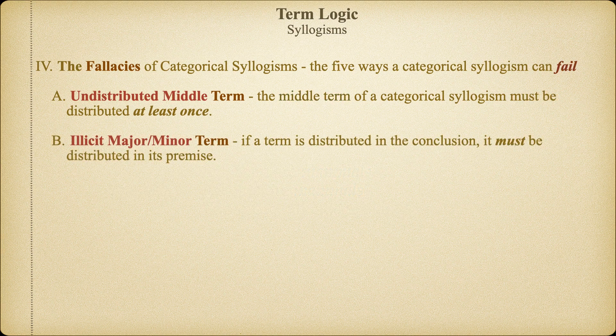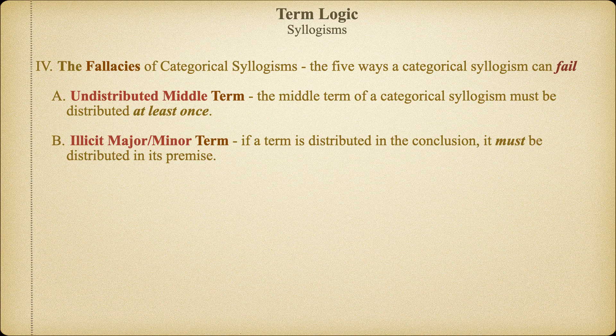The second rule for a valid categorical syllogism also involves distribution, but this time in reference to the major and minor terms. In order to be valid, a categorical syllogism which contains a distributed term in the conclusion must also have that term distributed in the premise in which it's found. If the minor term is distributed in the conclusion, it must be distributed in the minor premise. Likewise, if the major term is distributed in the conclusion, it must be distributed in the major premise.